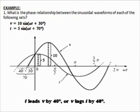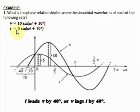Let's answer a problem on this topic to understand how to use those formulas and what phase relationship means. Problem number 1: What is the phase relationship between the sinusoidal waveforms of each of the following sets? The given equation for voltage B is equal to 10 sin(ωt + 30°), and the current I is equal to 5 sin(ωt + 70°).